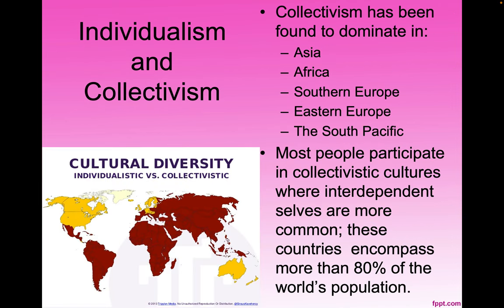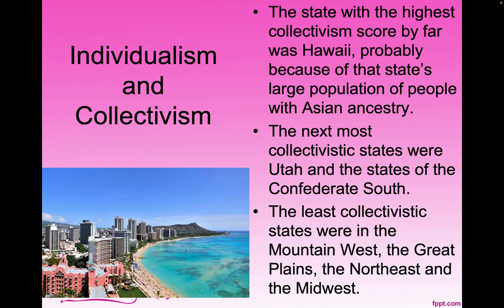Collectivism has been found to dominate in Asia, Africa, Southern Europe, Eastern Europe, and the South Pacific. Most people participate in collectivistic cultures where interdependent selves are more common. These countries encompass more than 80% of the world's population — so 80% of the world's population are more interdependent than independent. The state with the highest collectivism score by far was Hawaii, probably because of the state's large population of people with Asian ancestry.